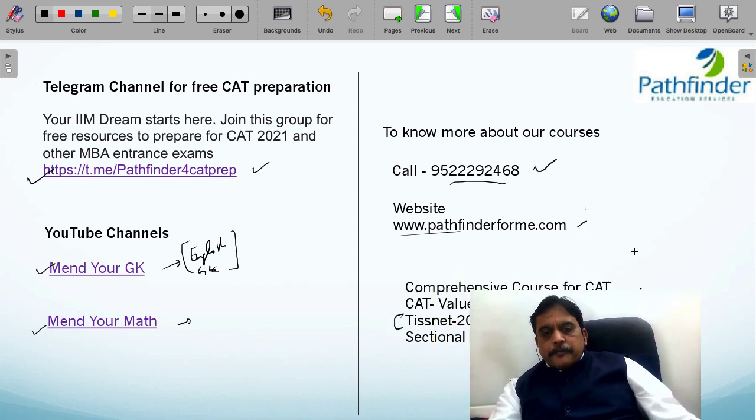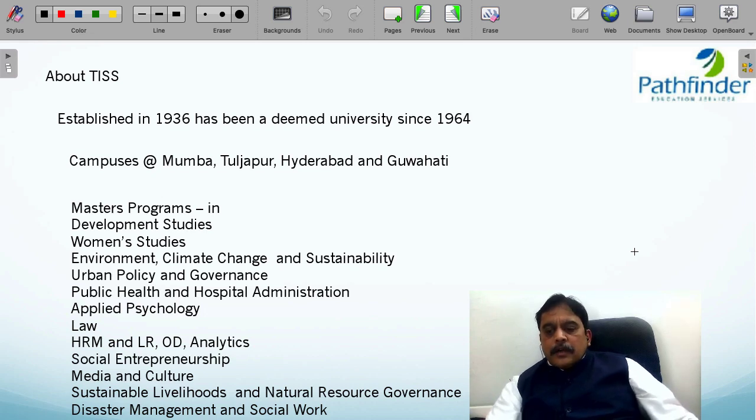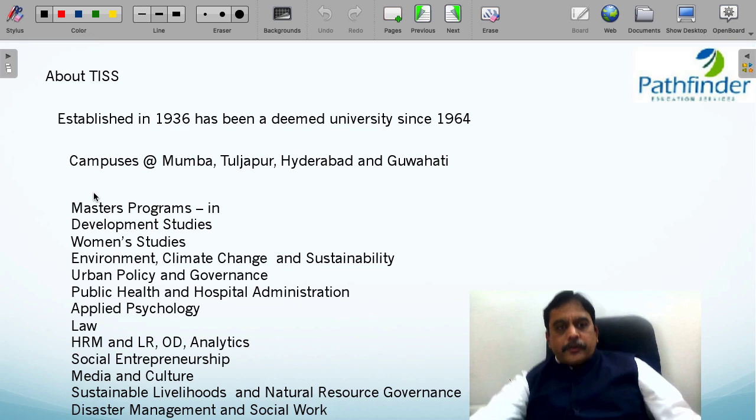Let us move to the first step: understanding what TISS as an institute is. It was established in 1936, a very old institute, and it has been a deemed university since 1964. I can assure you that this would be one of the oldest institutions offering education in management. Currently, they have campuses at four places: Mumbai, Tuljapur, Hyderabad, and Guwahati.